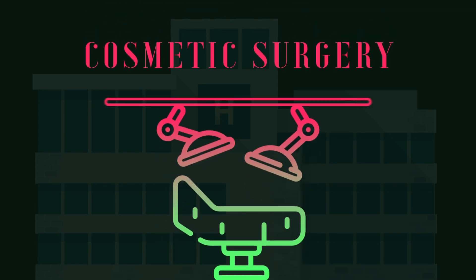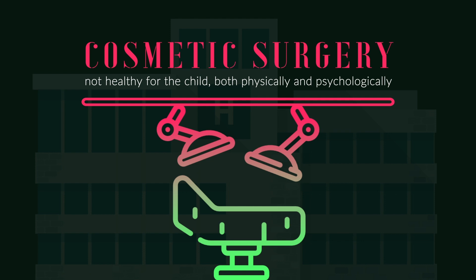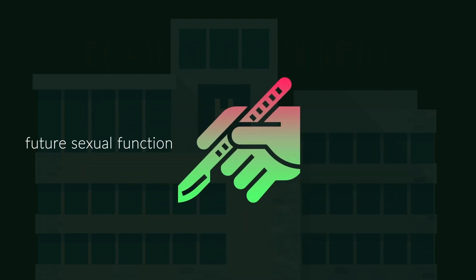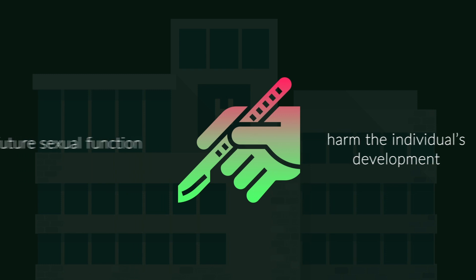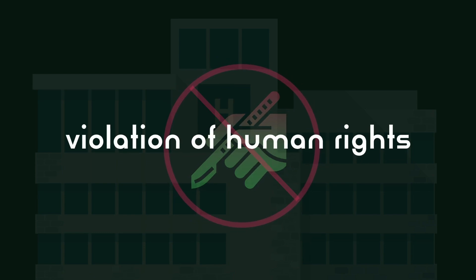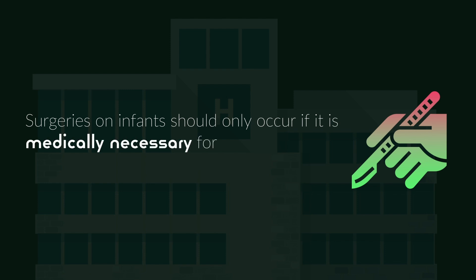Misinformed doctors and parents may think that cosmetic surgery is necessary to make the infant's genitals conform to typical norms. But this is usually not healthy for the child, both physically and psychologically. Unnecessary surgery can affect future sexual function and harm the individual's development. Because of this, such cosmetic surgeries are a violation of the baby's human rights. Surgeries on infants should only occur if it is medically necessary for present and future bodily function.